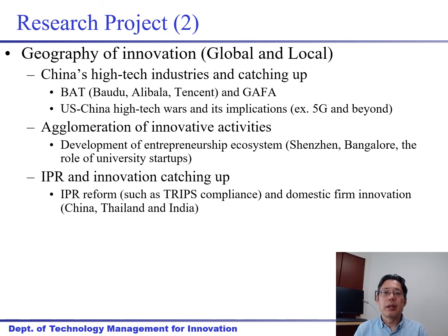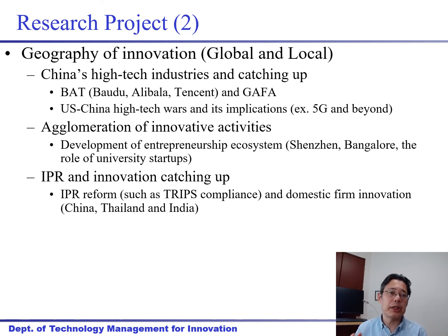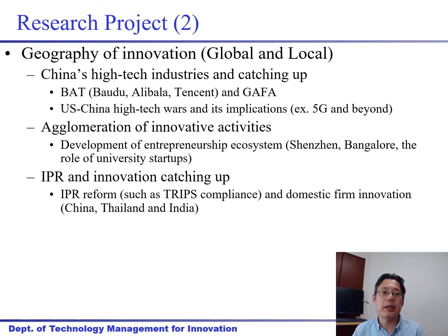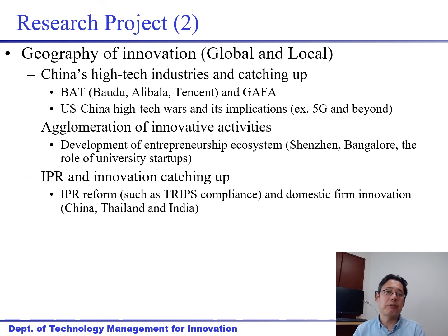Number three is geography of innovation — global and local. On the global side, we are focusing on China, which is a very important country for everyone and especially for Japan. We look at China's high-tech industry and its catching up — for example, BAT, which is Baidu, Alibaba, and Tencent, the internet platforms in China, comparable to GAFA in the US — Google, Apple, Facebook, and Amazon. Baidu is catching up technologically to GAFA significantly.